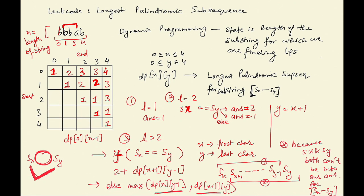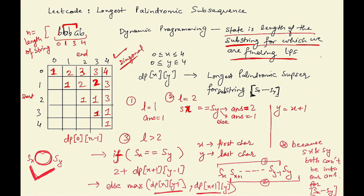There are many dynamic programming problems that are filled in the same diagonal way as this DP table, where the state is dependent on the length of the sub-problem for which we are finding our solution. It's good to know this problem of longest palindromic subsequence because you can then solve a larger set of problems that follow the same pattern. Now let's see this in code.